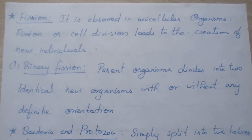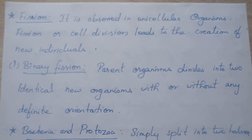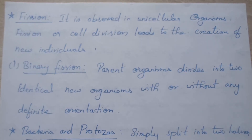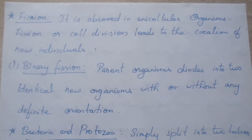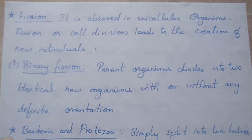We will continue with asexual reproduction. We are seeing what are the characteristics of asexual reproduction and what are the modes of asexual reproduction. One by one we will see in detail. The first one we are seeing is fission.